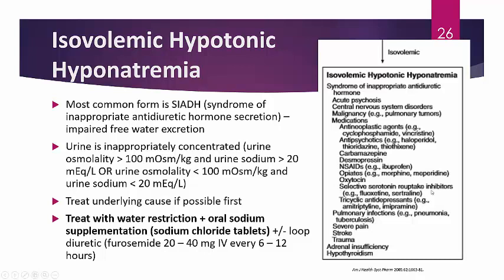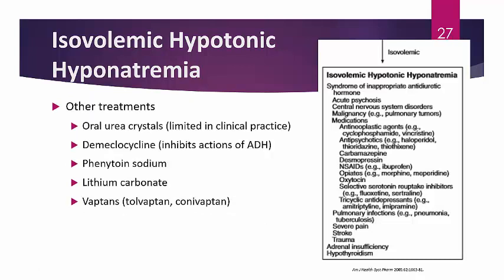If stroke is the cause of SIADH, treat the stroke first. You may also need water restriction and oral sodium supplementation like sodium chloride tablets. We don't need to correct volume — just restrict fluid to where it is. A loop diuretic may be used to remove excess free water. Other treatments for isovolemic hypotonic hyponatremia — used less frequently — include oral urea crystals, demeclocycline (which inhibits ADH), phenytoin, and lithium.